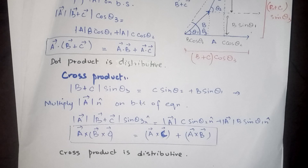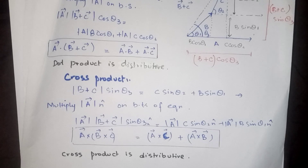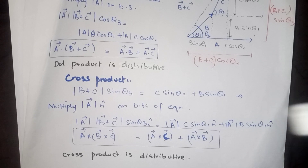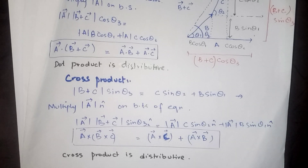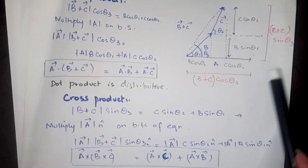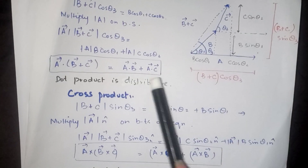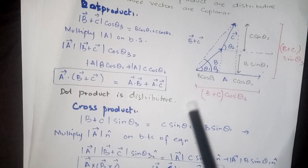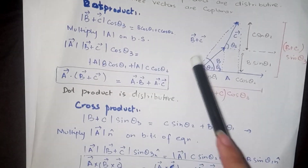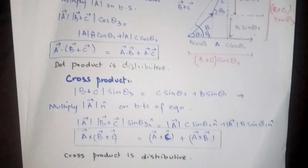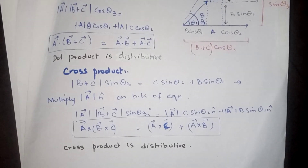So what is the result? The cross product is also distributive. We had to prove that the dot and cross products are distributive using coplanar vectors. We have shown that both the dot product and cross product are distributive.